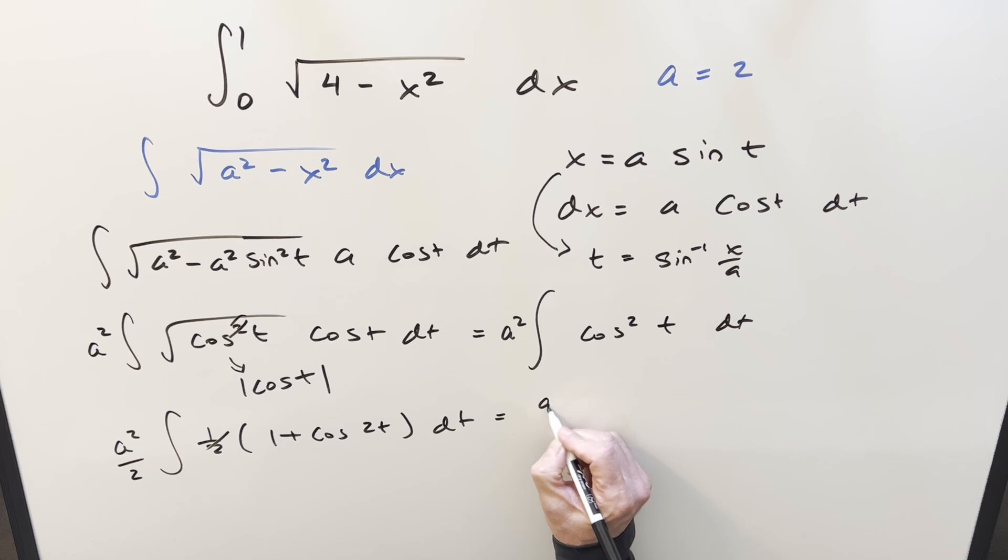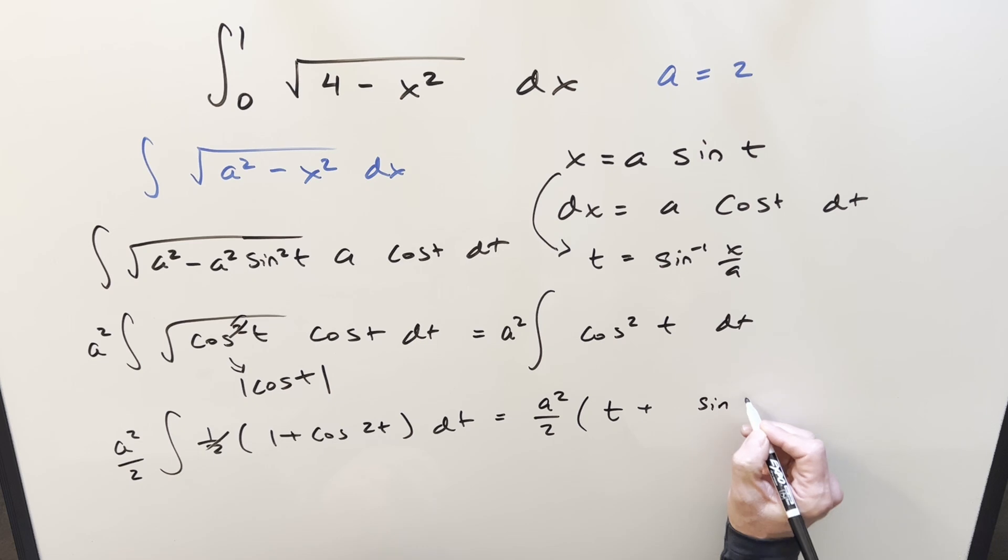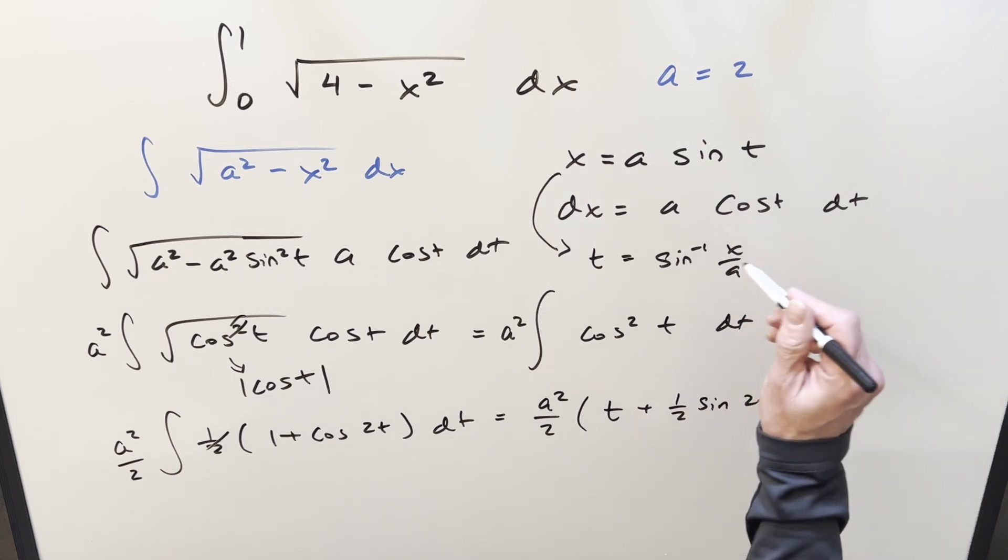go ahead and integrate, we've got our a squared two, this is going to become t plus sine two t, but we're going to have like a one half pop out. And then this is going to be, well it's going to do plus c, but we should actually back substitute to get our formula.